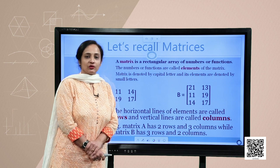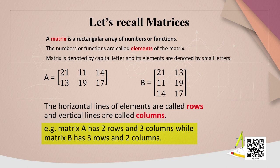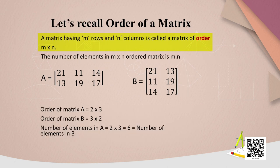Let us revise some of the concepts of matrices. A matrix is a rectangular array of numbers or functions. The numbers or functions are called elements of the matrix. A matrix is denoted by a capital letter and its elements are denoted by small letters. The horizontal lines of elements are called rows and the vertical lines are known as columns. A matrix having m rows and n columns is known as a matrix of order m by n. The number of elements in an m by n ordered matrix is m into n.